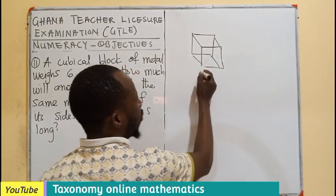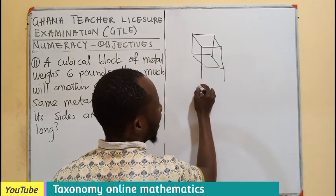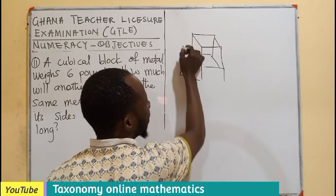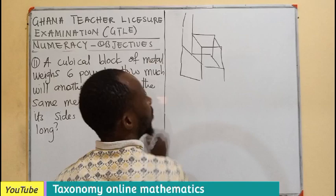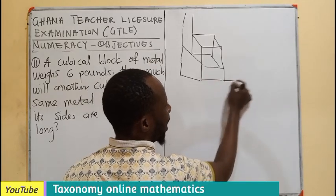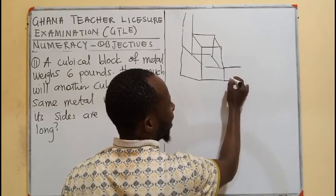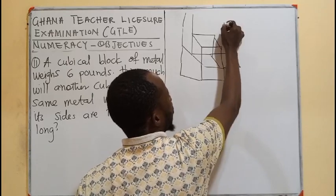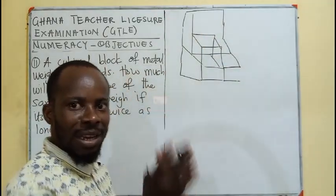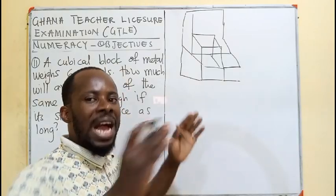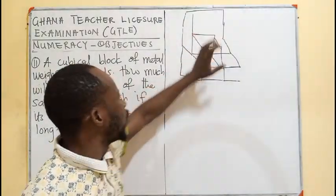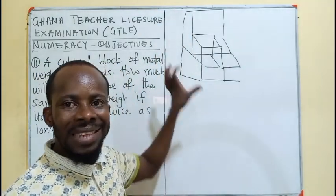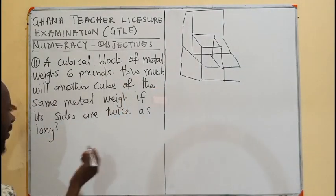Now, if the length are double, meaning here will be extended, here will be extended. So, I'll be having the double of that. This will also be extended. You can see that way. If I come here, it will be extended. So, here extended, this place extended, this is going to be extended. The top will be extended. So, at the end of it, you have seen the picture, it will be getting bigger. So, now, the smaller one is weighing six pounds. Then, we need to know how much will the second one also weigh.